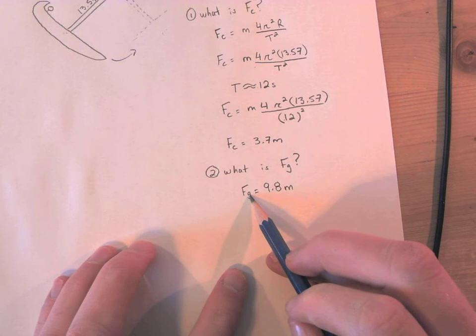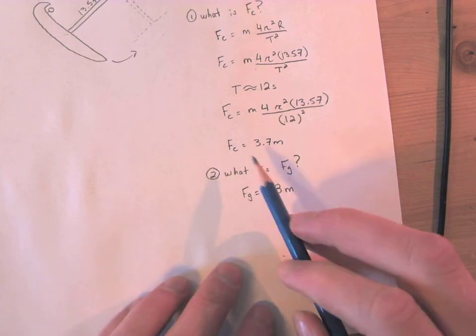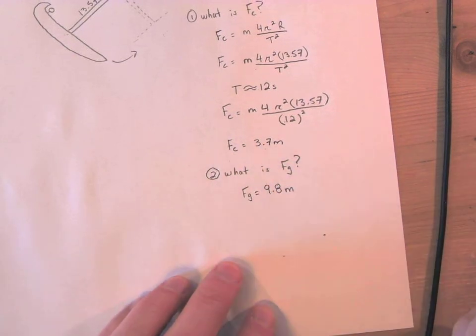That one was easy. Force of gravity is 9.8 times m. Force centrically is just 3.7 times m. So it's not going super super fast.